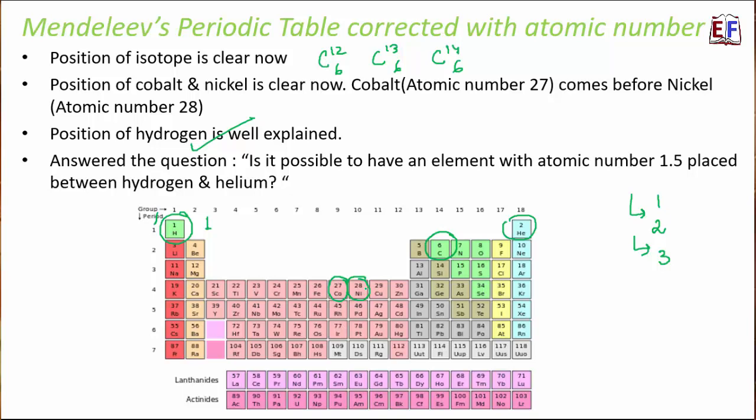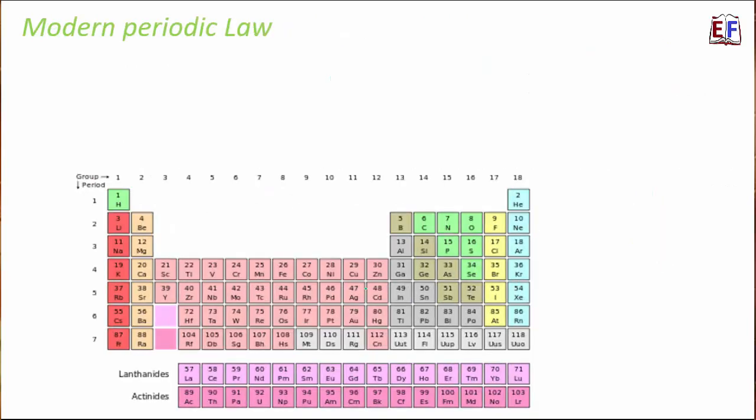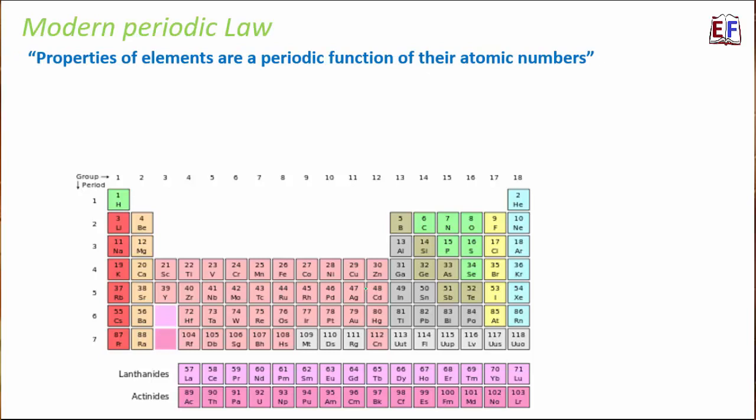With the modern periodic table, where elements are arranged based on atomic number, most of the shortcomings of Mendeleev's table were resolved. The modern periodic law stated that properties of elements are a periodic function of their atomic numbers and not atomic masses, showing that atomic number is a more fundamental property.